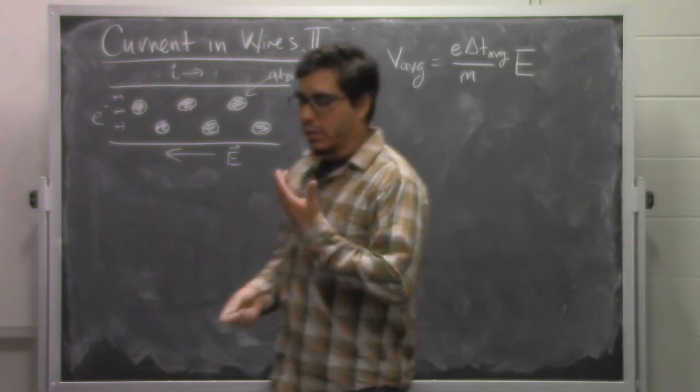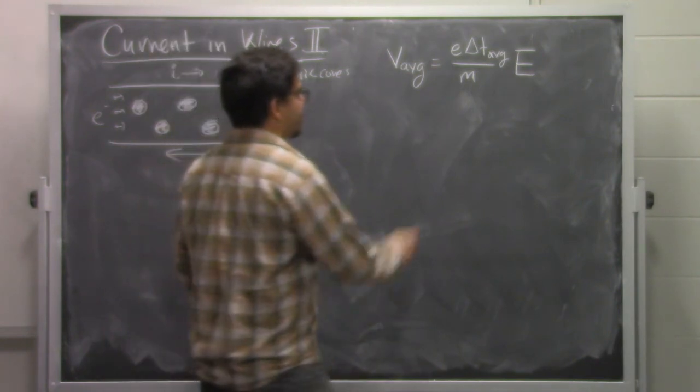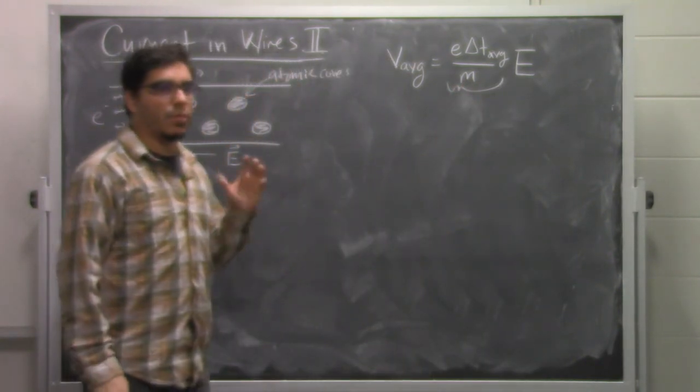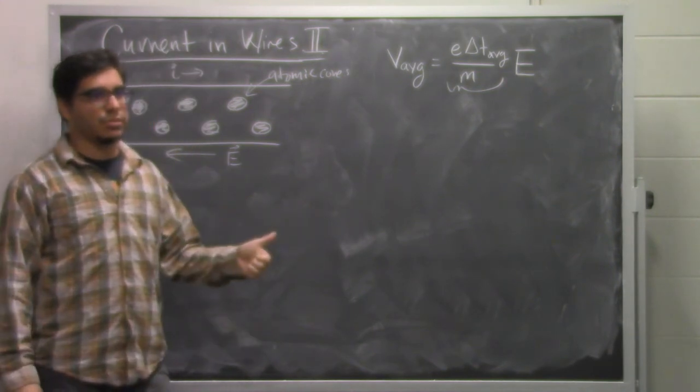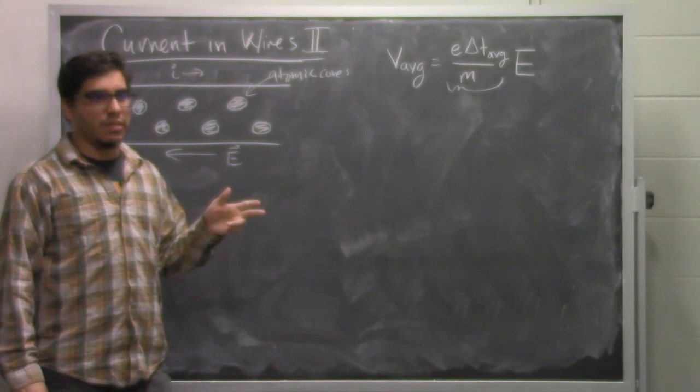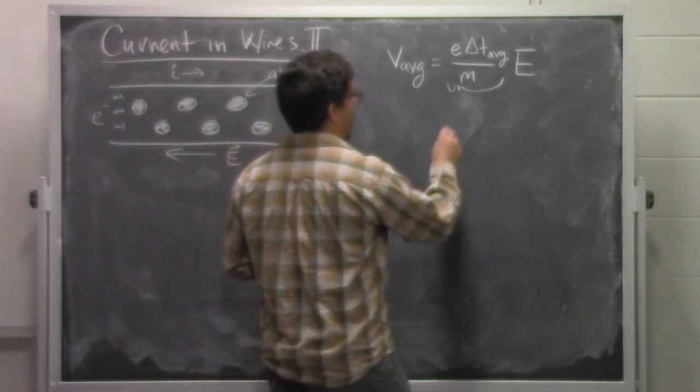What we're going to do in this video is relate this to some macroscopic quantities that we can actually measure in the laboratory. So this guy here is a constant in the sense that once you know what the charge carriers are, they have a given charge, they have a given mass, and there's an average time between collisions that we can't measure, but this quantity we can measure for different kinds of objects.